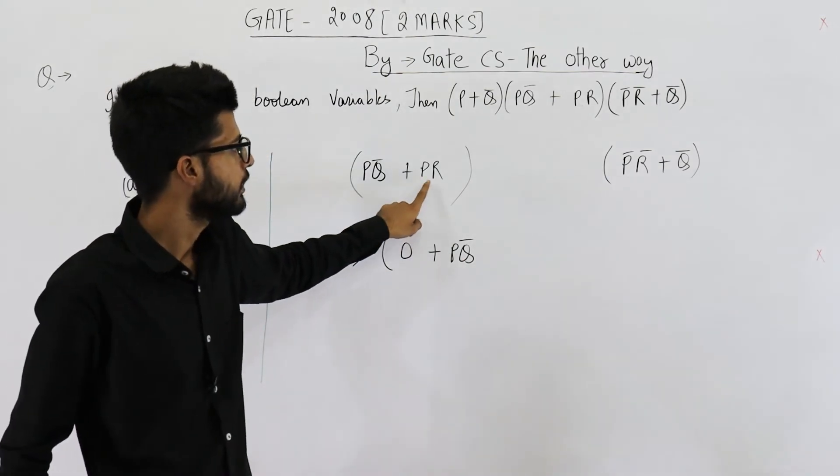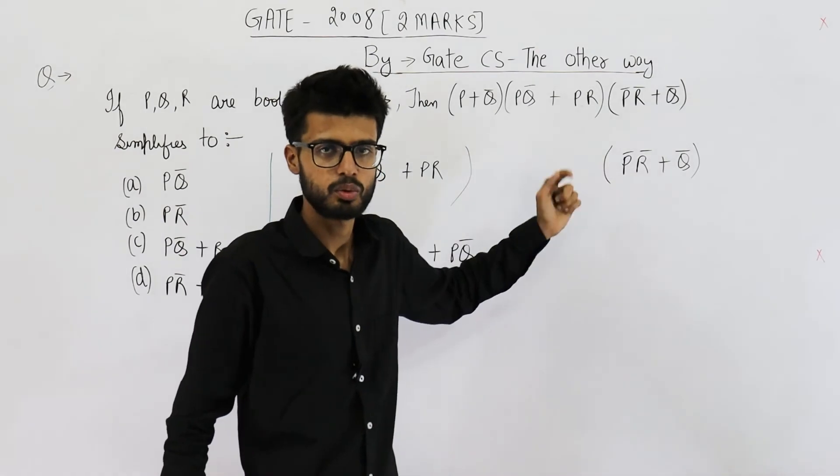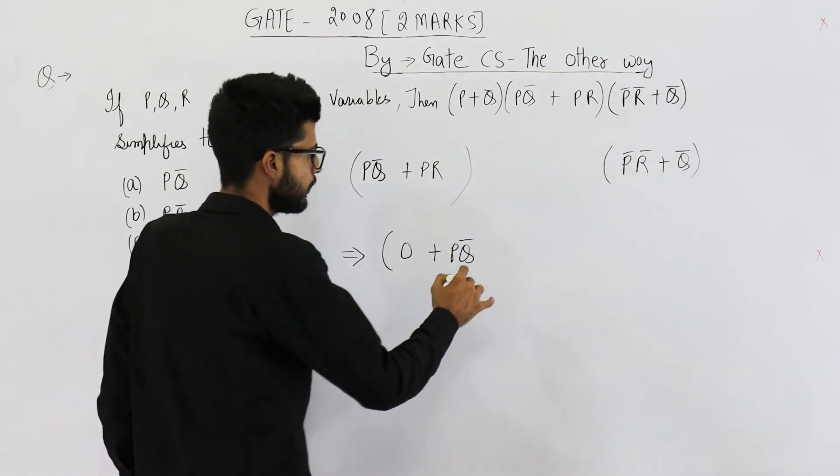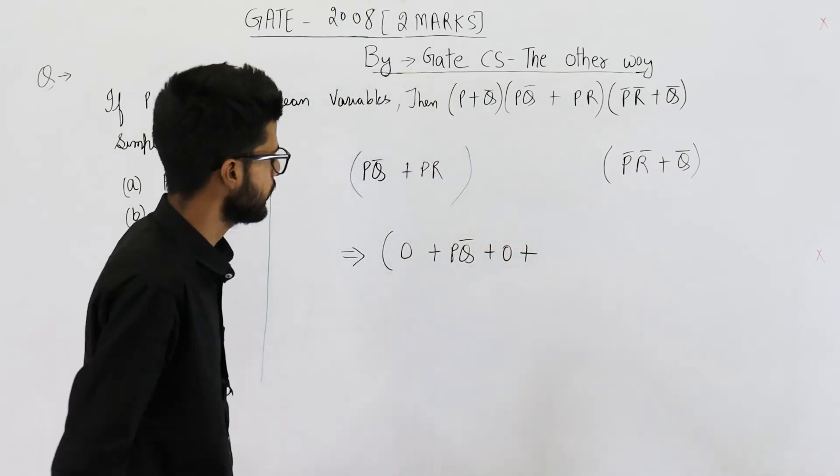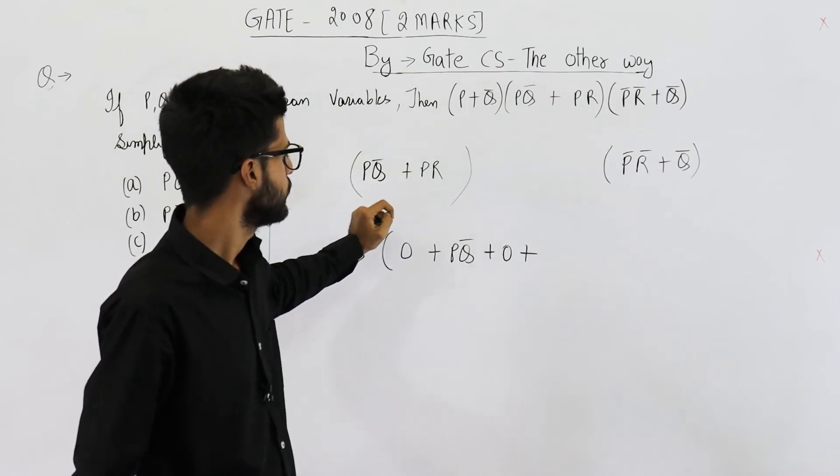Then next one is PR into P̄R̄. This one will also be zero because P into P̄ is zero. So this is plus zero. Plus next, we are going to get PR into Q̄.